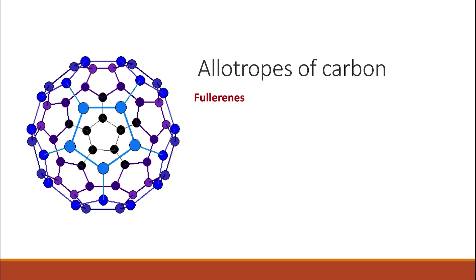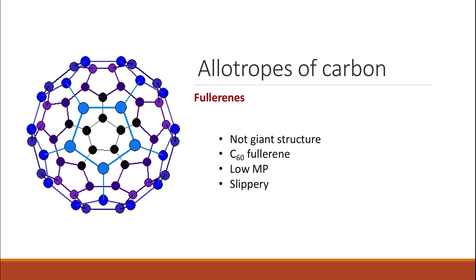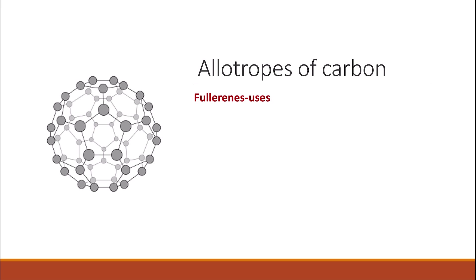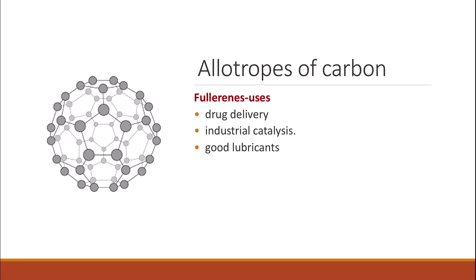Fullerene is another allotrope of carbon with a ball-like shape. C60 fullerene is the Buckminster fullerene — a very common exam question. It is not a giant structure; it has 60 carbon atoms forming quite a large molecule. It has a low melting point because of low intermolecular forces of attraction between the molecules, and it is also slippery for the same reason, allowing molecules to slide past each other. Fullerenes can be used in drug delivery, as industrial catalysts, and as lubricants.